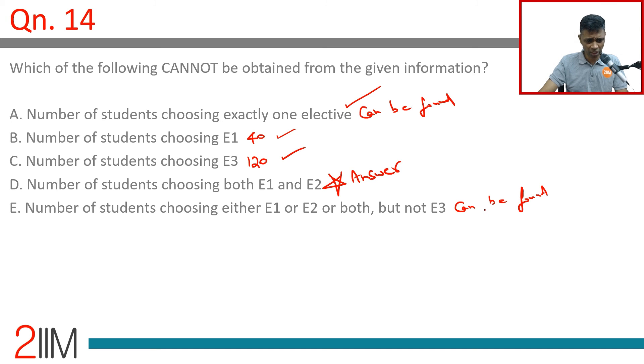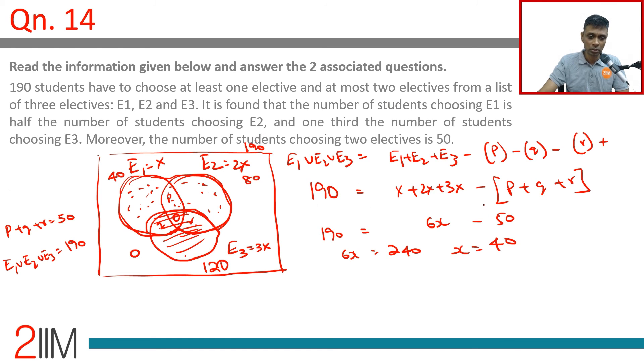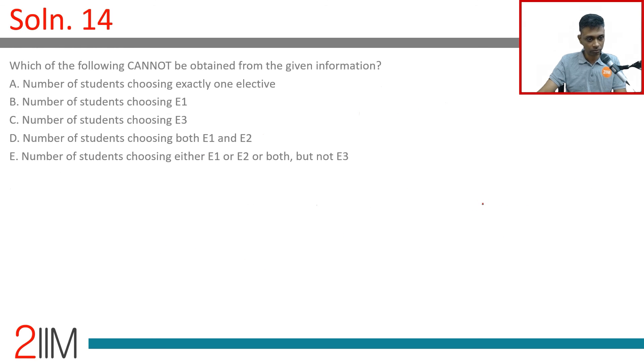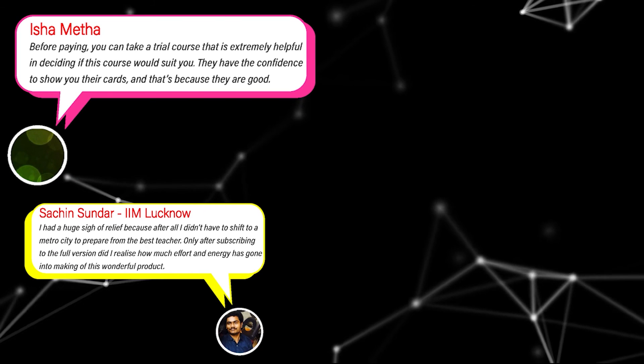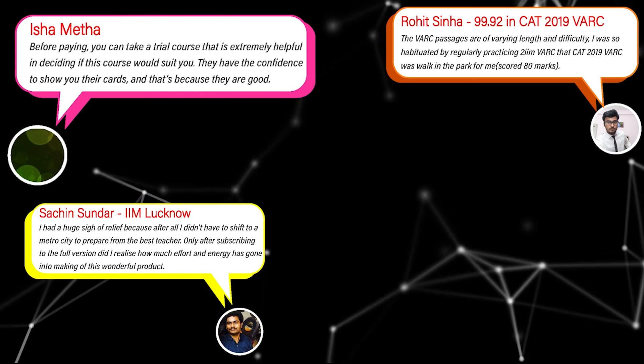Number of students choosing both e1 and e2, that we cannot find.